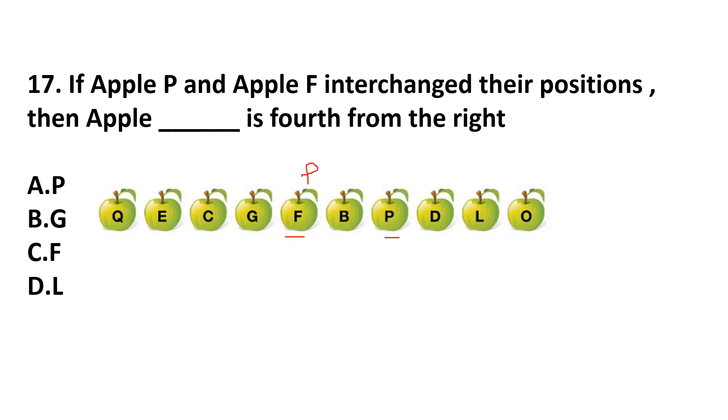Apple P and apple F interchange. Now this is P and this is F. This is right side and this is left. So from right, fourth from the right is first, second, third, fourth. F is fourth from the right. Answer is option C.